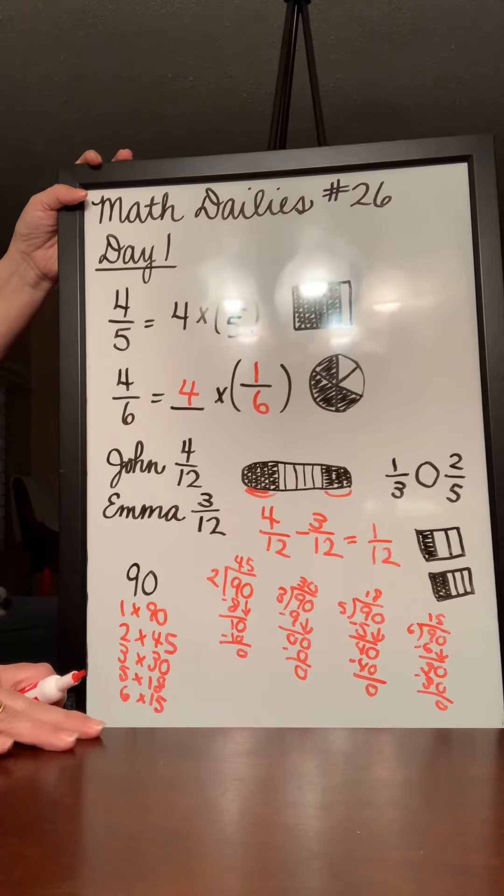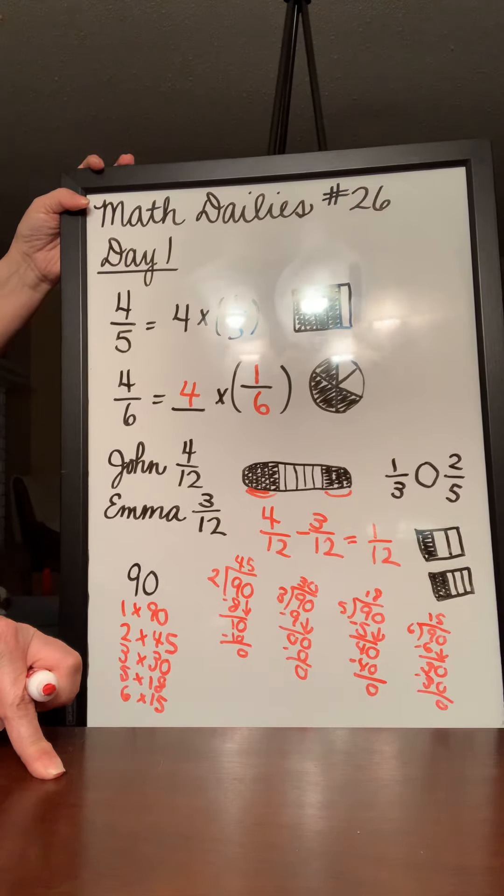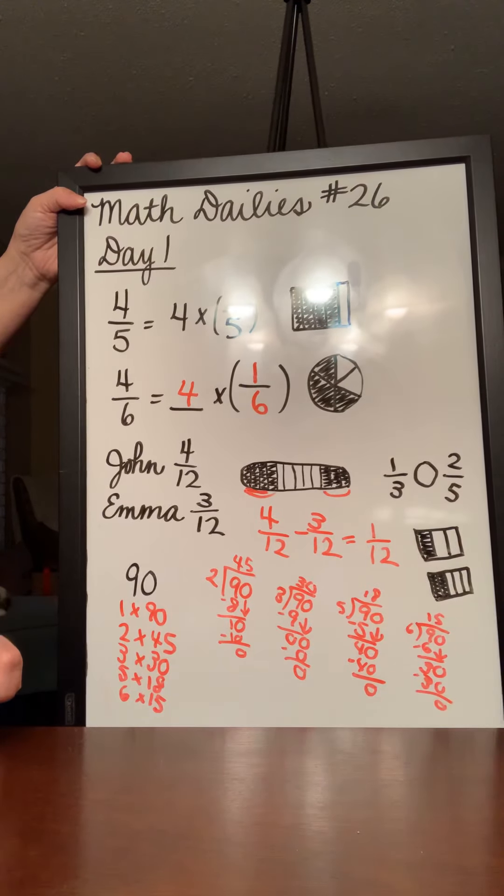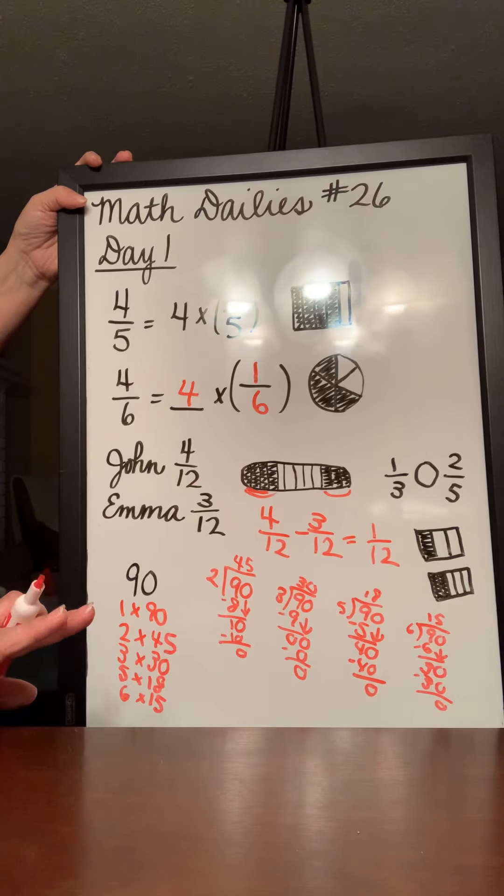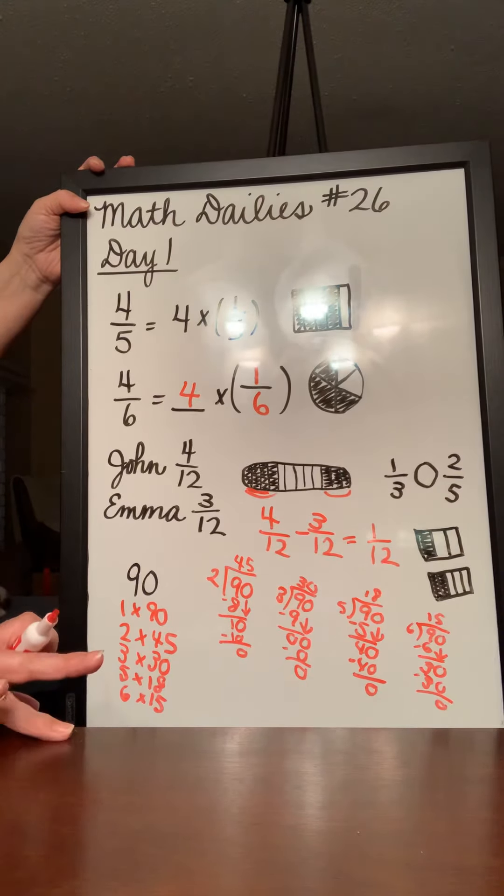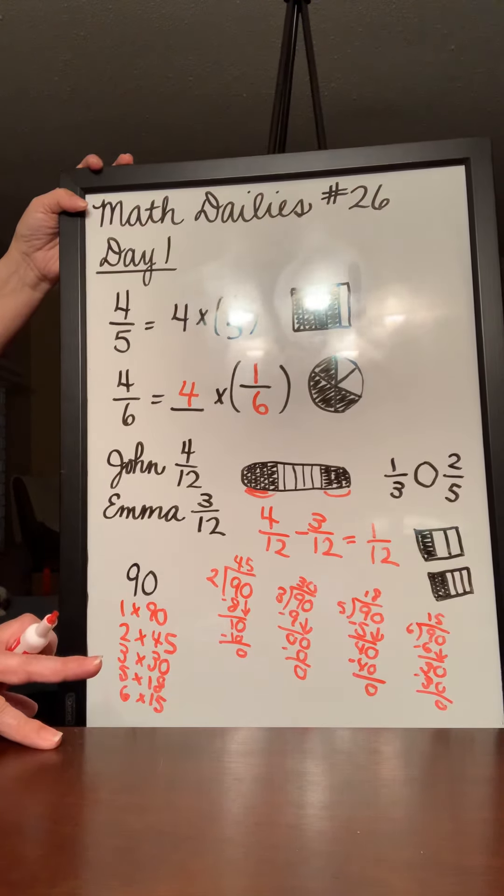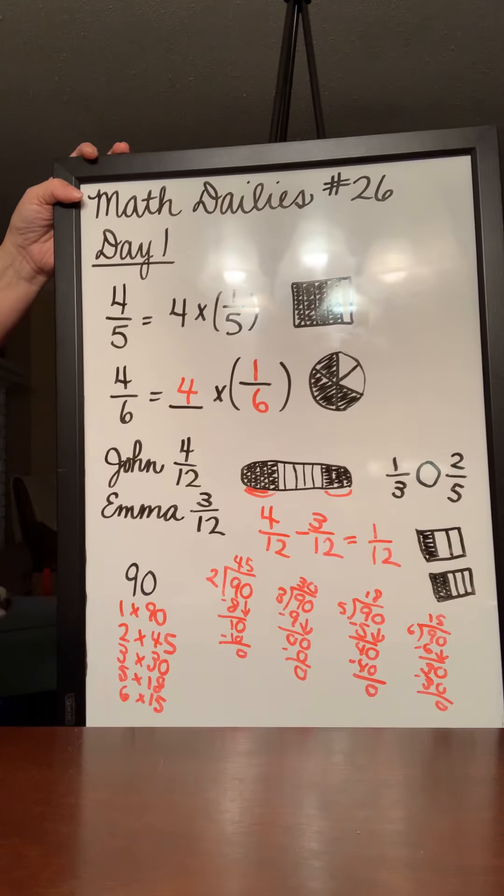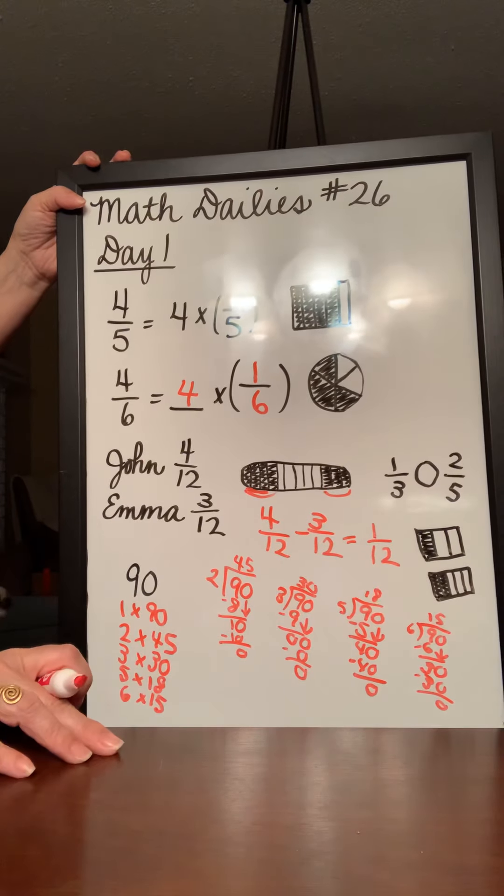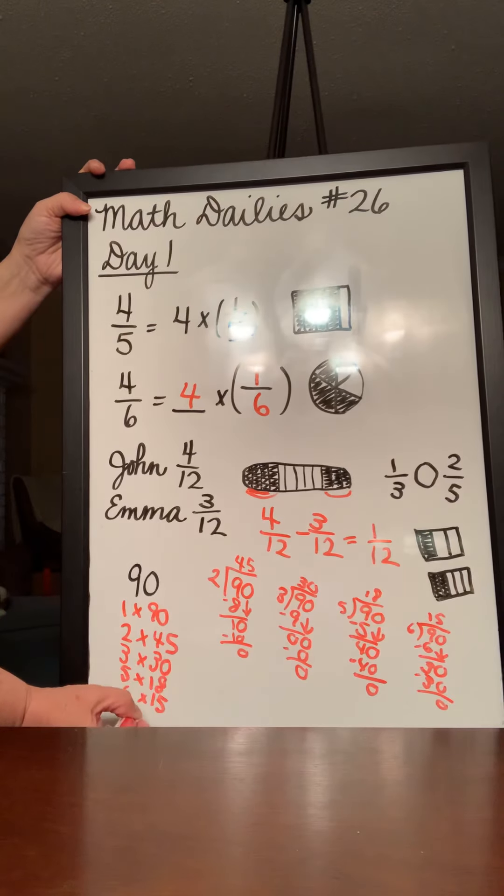Now we know 7 times 12 is 84. And if we added 7 more to that, we would get 91. So 7 doesn't work. 8 doesn't work because 8 times 11 is 88. And 8 times 12 is 96. So that won't work. What about 9? Will 9 fit into 90?